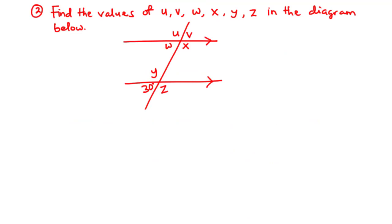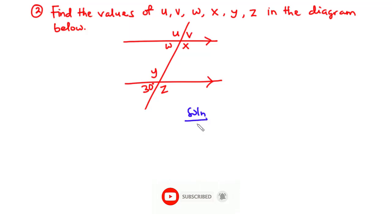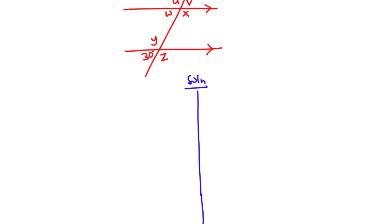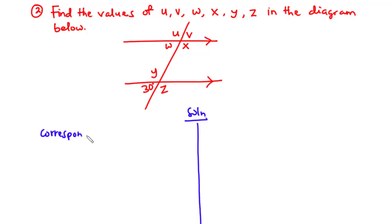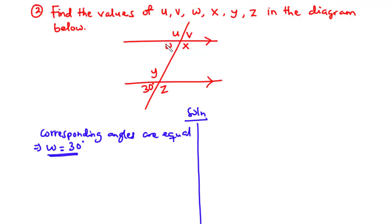Example two: find the values of U, V, W, X, Y, and Z in the diagram. Like in the previous example, W and the given 30-degree angle are corresponding angles, and corresponding angles are equal, so W equals 30 degrees. Then W and V are vertically opposite angles, and vertically opposite angles are equal, therefore W equals V equals 30 degrees.